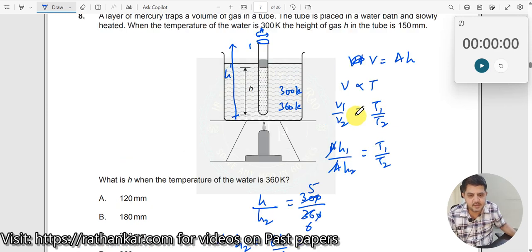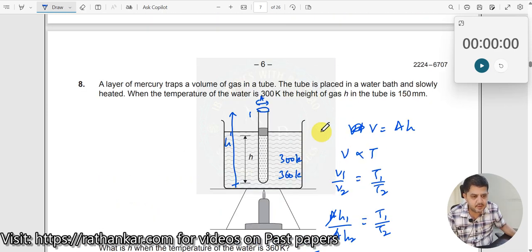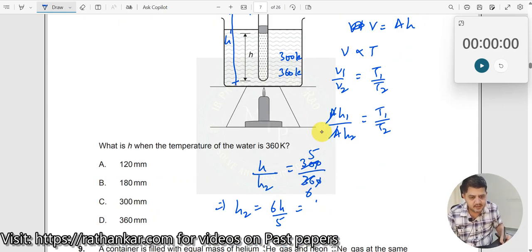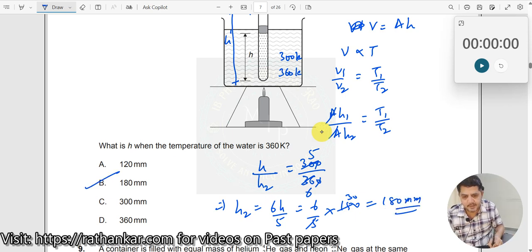What is H value? H value is given. Value of H is 150 millimeter. Let us substitute that which should be 6 by 5 multiplied by 150. 5 3 is R which should be equal to 180 millimeter. Thus the answer is 180 millimeter. Okay.